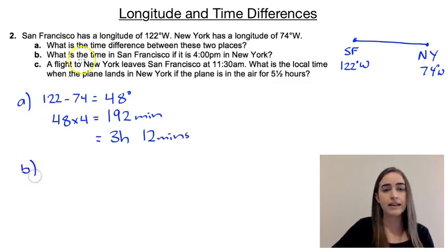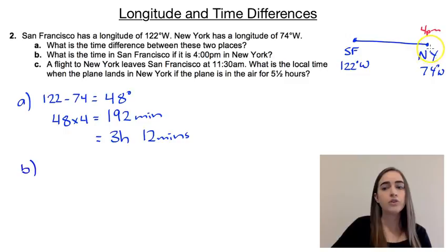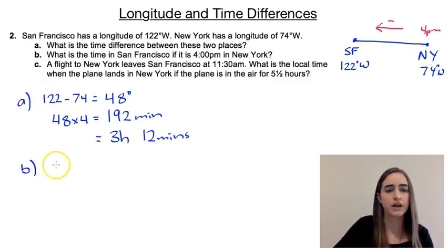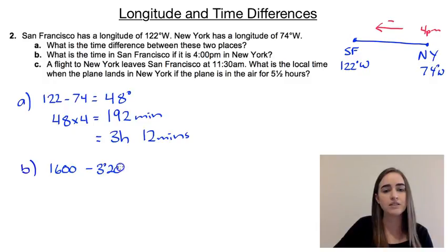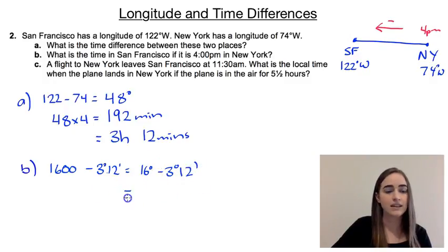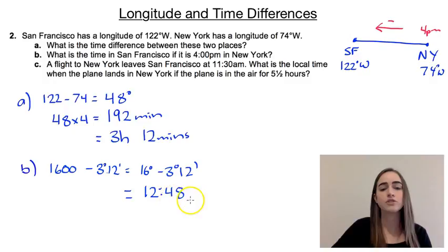Part B asks: what is the time in San Francisco if it's 4pm in New York? New York, being further east, gets the day first, so it will be earlier in San Francisco. Moving west, we subtract that 3 hours and 12 minutes. Putting 4pm in 24-hour time as 1600, we calculate 1600 minus 3 hours and 12 minutes, which gives us 12:48 — so 12:48pm in San Francisco.